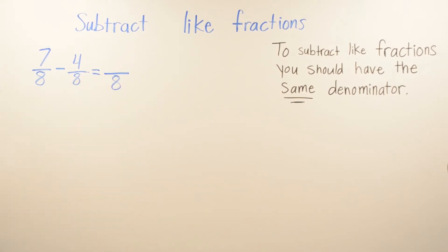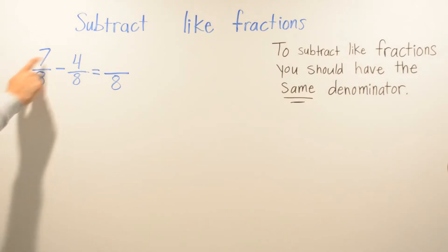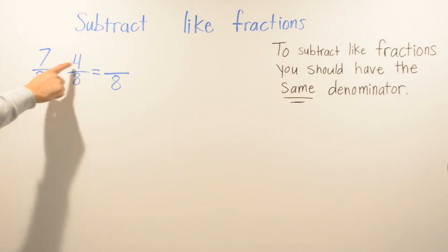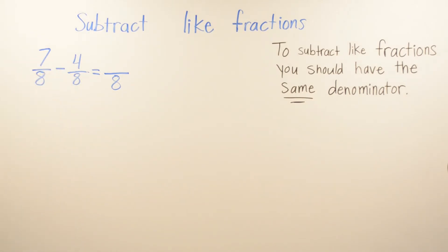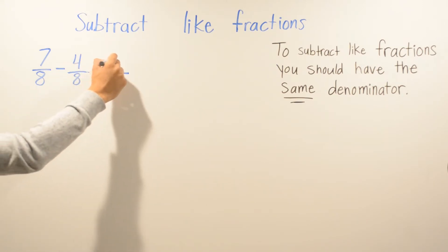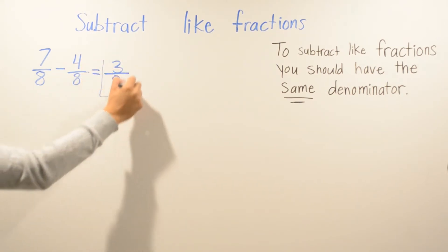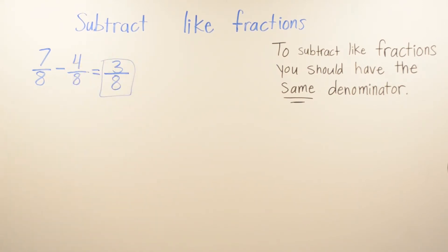The only thing that changes is your top numbers. So we do 7 minus 4, which is going to be 3. That's your answer: 3 over 8.